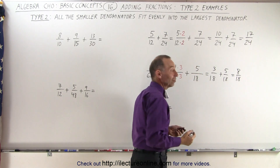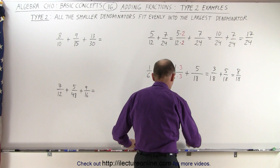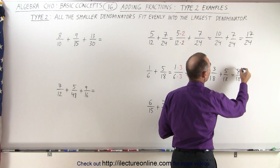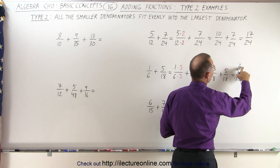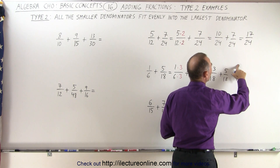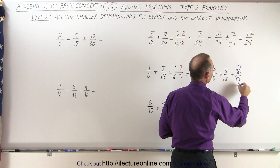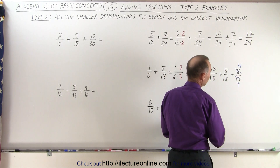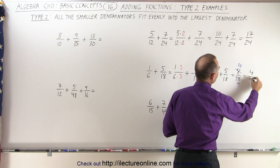Since both numerator and denominator are even, I can simplify by dividing both by 2. So 8 divided by 2 is 4, and 18 divided by 2 is 9. The final answer in reduced form will be 4 over 9.